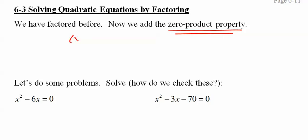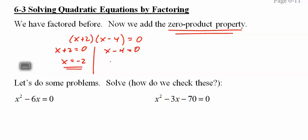The zero product property means that if I have two things and they multiply to equal zero, then either this side equals zero or this side equals zero. So to solve it, just break it into two pieces and say, what would it take to make this side equal zero? What would it take to make this side equal zero? Our answers are negative two and four.